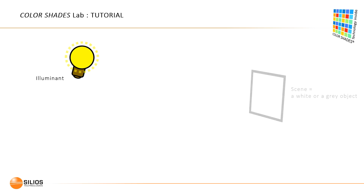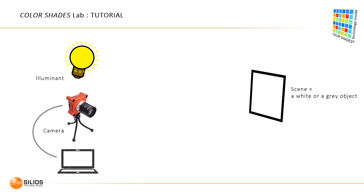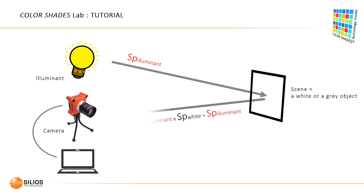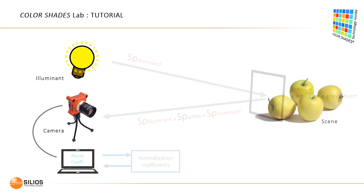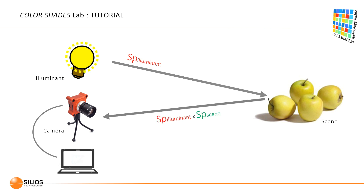This step is a way to retrieve the illuminant spectrum from the measurement. Consider a source, a white or gray object, and the camera with its computer. The spectrum of the source is the illuminant spectrum. The spectrum reflected to the camera is the product of the illuminant spectrum by the flat spectrum of the object, giving a measurement of the illuminant of the source. A set of normalization coefficients associated to the spectral bands are then computed and applied to any further measurement. It corrects the illuminant spectrum bias and allows measuring the actual spectrum of the scene.